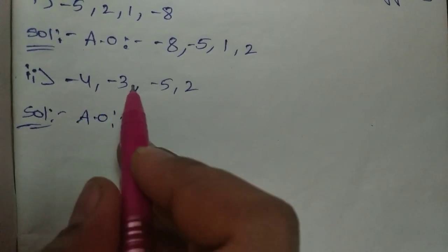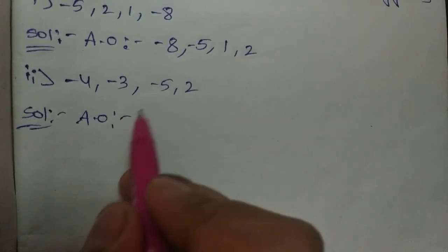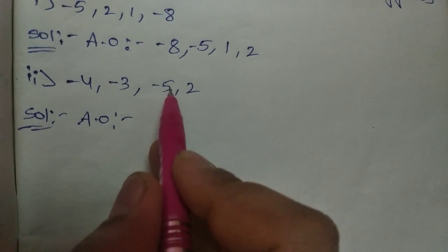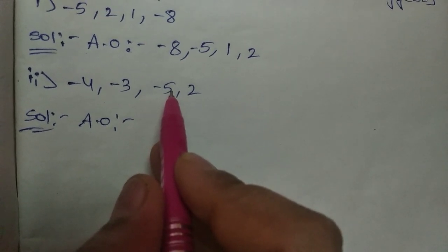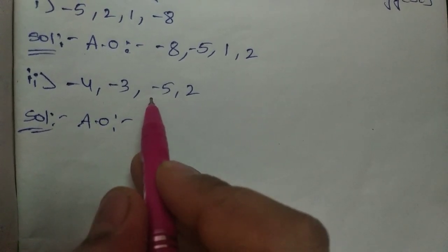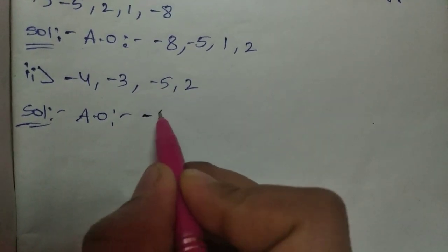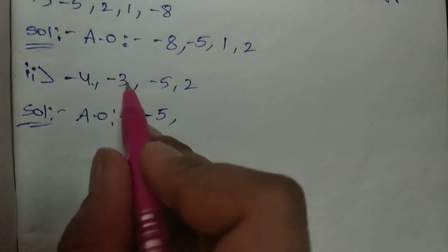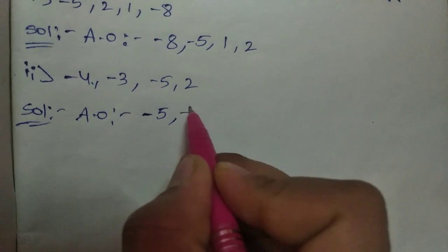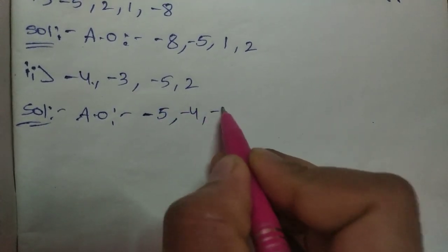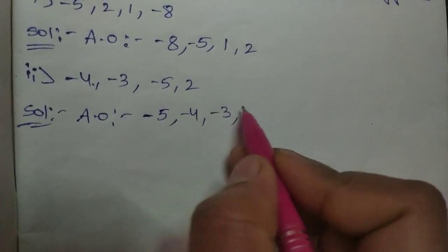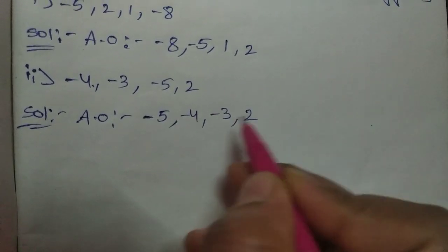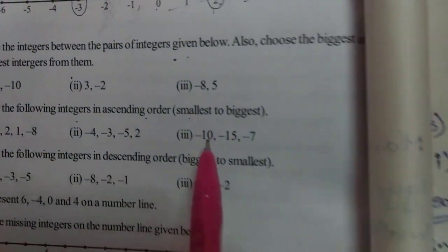There are three negative integers: minus four, minus three, and minus five. Five is actually the biggest digit, but with the negative sign it becomes the smallest integer. So the order is: minus five, minus four, minus three, and the remaining integer is two. That is the ascending order.